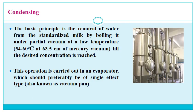Condensing is done after preheating. The basic principle is the removal of water from the standardized milk by boiling it under partial vacuum at a low temperature of around 54 to 60°C and a vacuum of 63.5 cm of mercury, until the desired concentration is reached. When we maintain vacuum or low pressure, evaporation takes place very fast, since the boiling point of water reduces with reduction of pressure. This operation is carried out in an evaporator, preferably of the single-effect type called the vacuum pan.